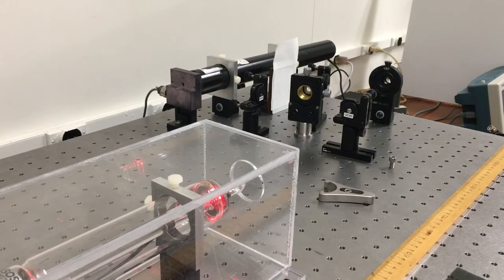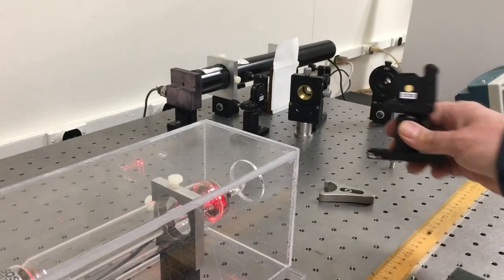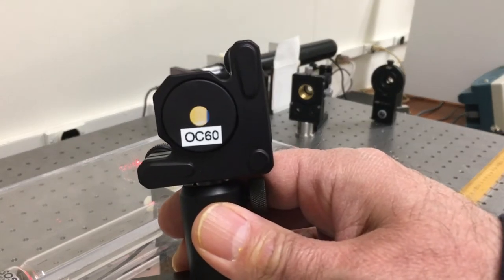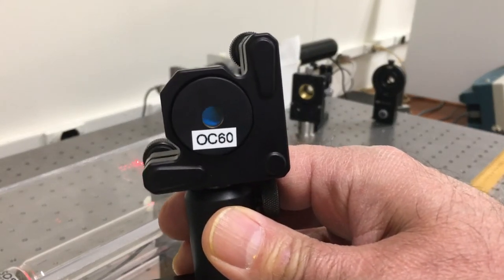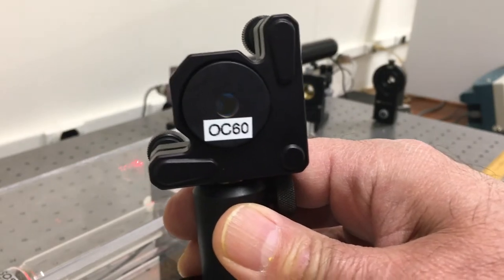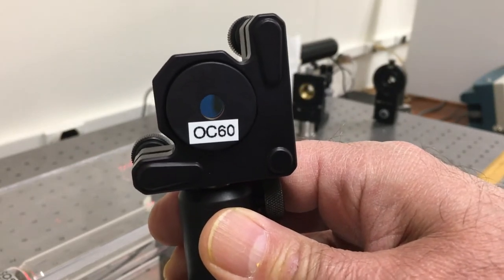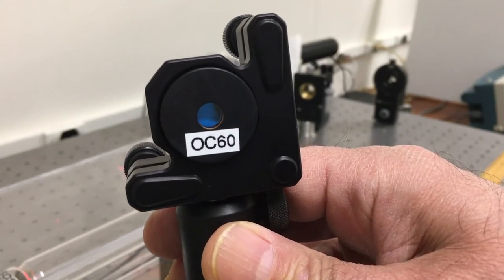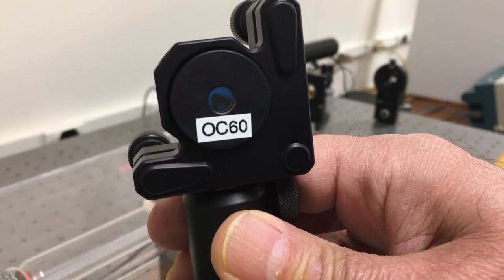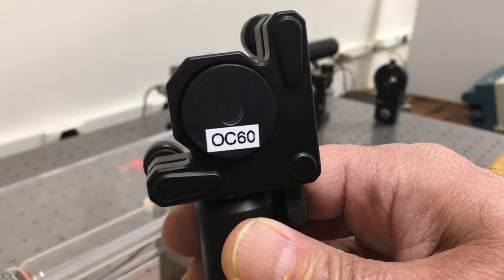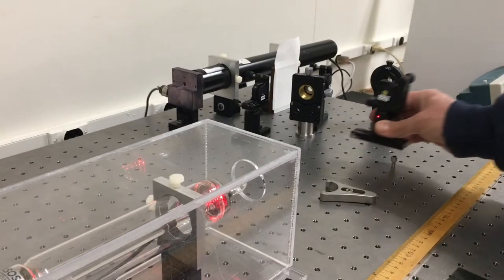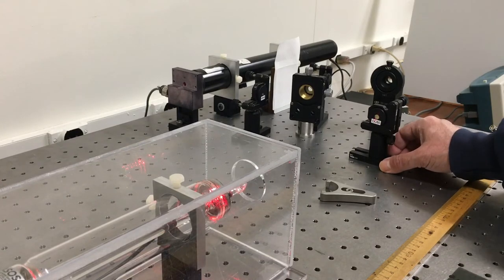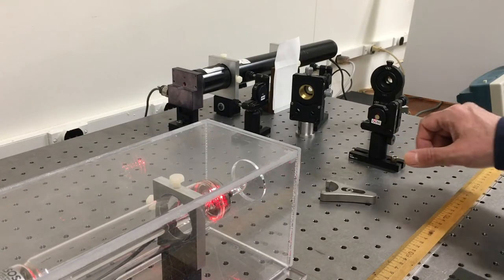Now I want to add a mirror to the cavity at one end. I'll start with this mirror. The OC means it's an output coupler with 97 or 98 percent reflectivity, so it lets a couple percent of light pass out the back. The 60 means it has a radius of curvature of 60 centimeters. I'm going to put that over here.